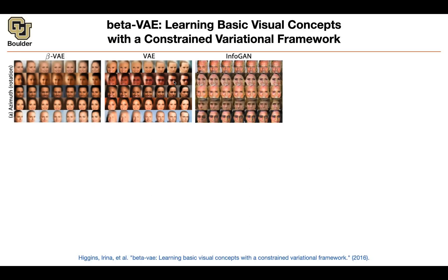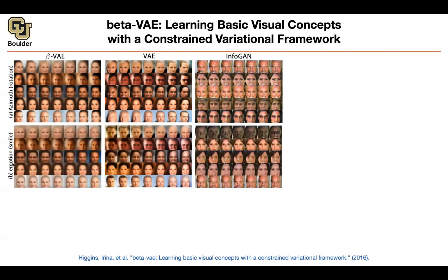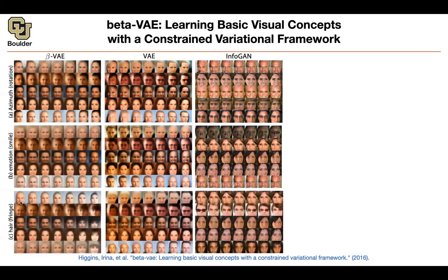There is actually research on trying to make them interpretable. Could you, throughout your training, make sure that some of the components of those vectors correspond to perhaps rotation, so that as you change them, the rotation of these faces changes? Or some of them correspond to emotion, or hair. So now you're trying to associate meaning to the latent variables. But a variational autoencoder is not going to do it.